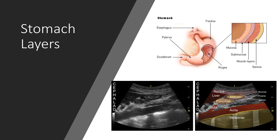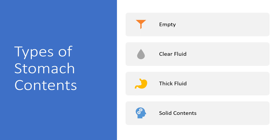The stomach wall consists of three layers of alternating echogenicity. The outermost layer is the serosa, which appears as a thin hyperechoic line. Next is the muscularis propria, immediately deep to the serosa, appearing as a thick hypoechoic line — often the easiest layer to identify. The mucosa is the innermost layer and appears as a thin hyperechoic line. Occasionally five layers can be seen, but the two innermost are thought to be artifactual due to the interface between the mucosal layer, fluid, and the gastric lumen.